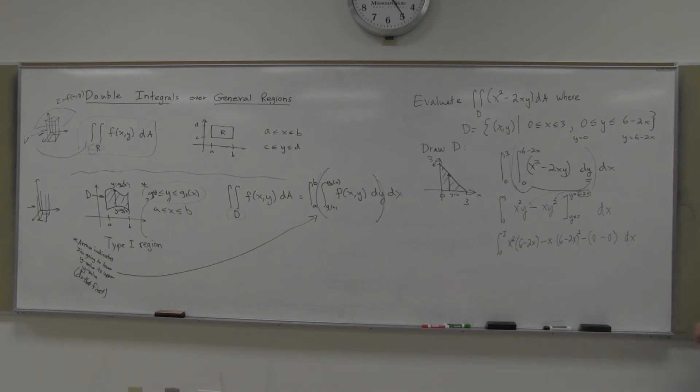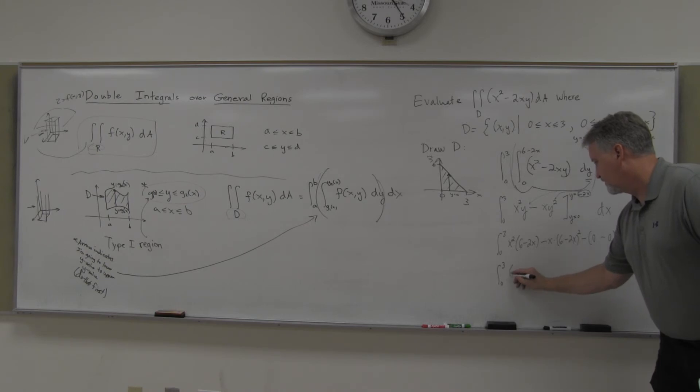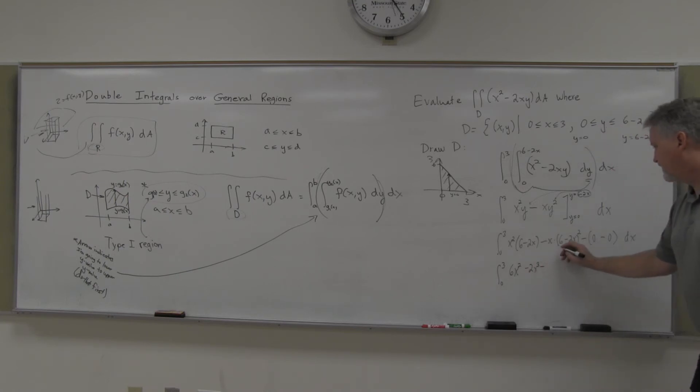And so, just simplify that as our next thing here to do, so it would be 6X squared minus 2X cubed. See, this would be X, go ahead and foil this out, what is that, 36, it would be minus 12X, another minus 12X, and minus 24X, plus 4X cubed. And then I'll distribute the minus X there, so it would be minus 36X plus 24X squared minus 4X cubed dX, and it won't always happen, but we do have some like terms, so combine those, and we'll be just about negative 6X cubed plus 30X squared minus 36X, all the like terms.